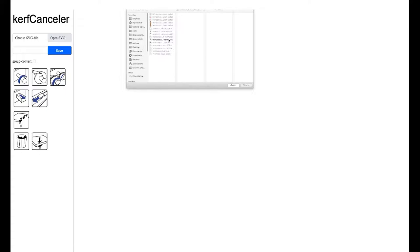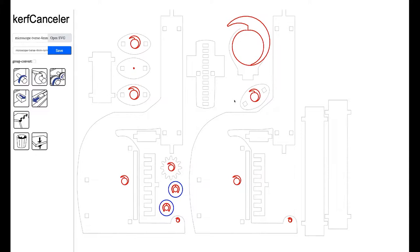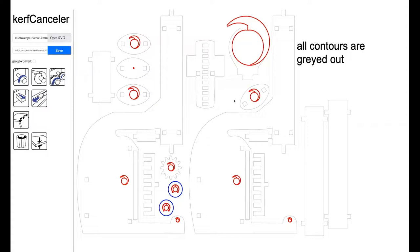Let's look at how our software tool KerfCanceler achieves that. KerfCanceler runs in the browser. Users just load the SVG file right into the editor. When the file is loaded, KerfCanceler analyzes the geometry in the model to determine what are contours in the model. Given that the contours are typically not part of the mechanisms themselves, KerfCanceler grays them out to put the focus on the actual mechanisms.